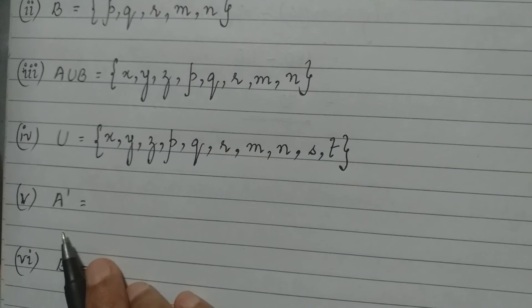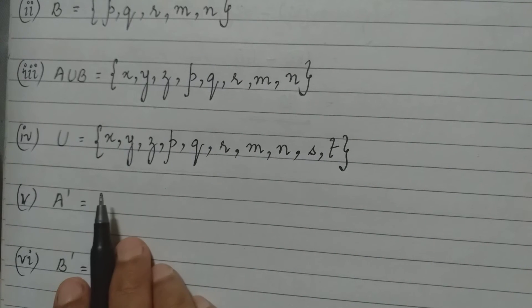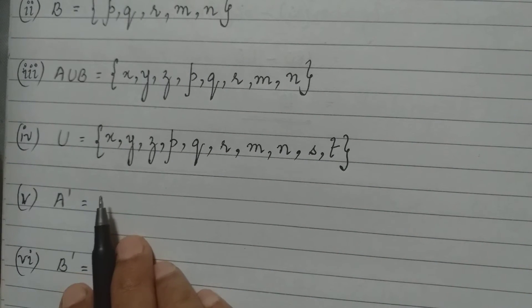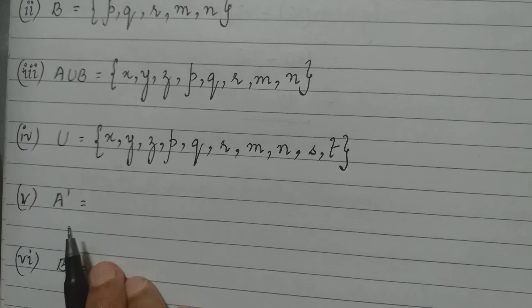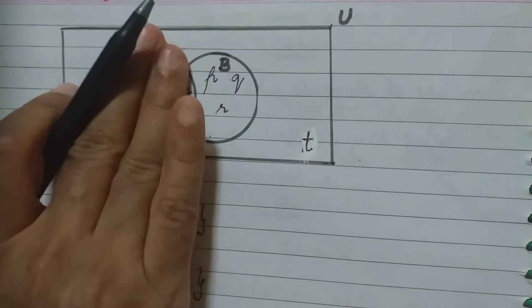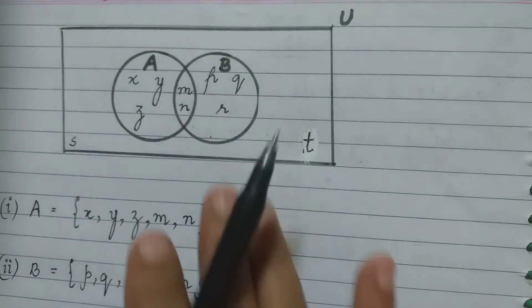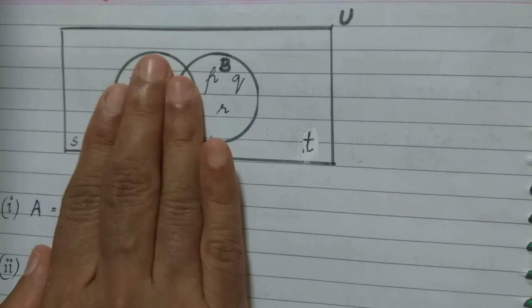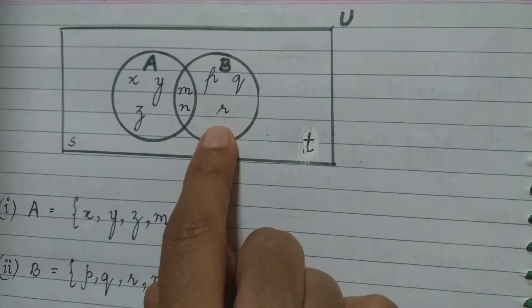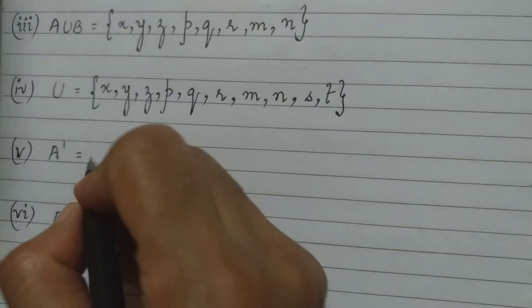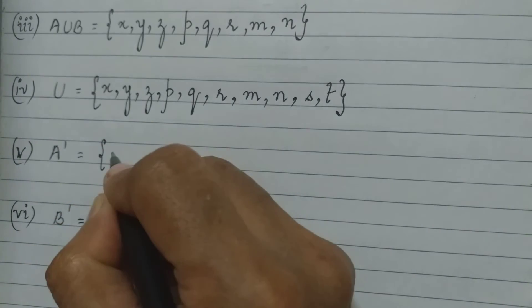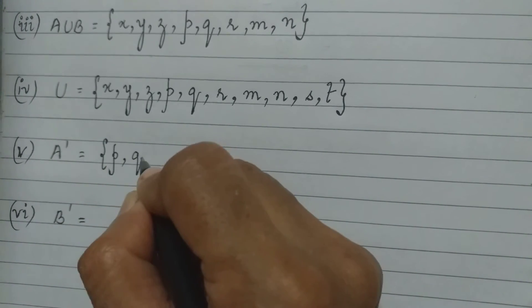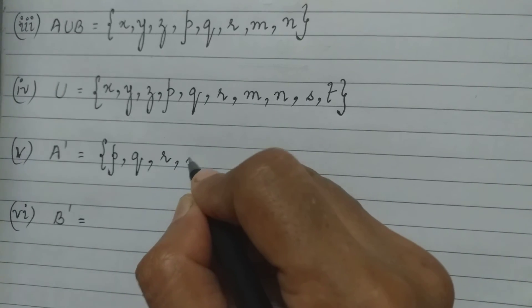The next set they want is A dash, or A complement. When we write A complement we include all elements which are in the universal set but are not in set A. So I close this circle, and outside it I see the elements P, Q, R, S, and T. So A dash or A complement will have the elements P, Q, R, S, and T.